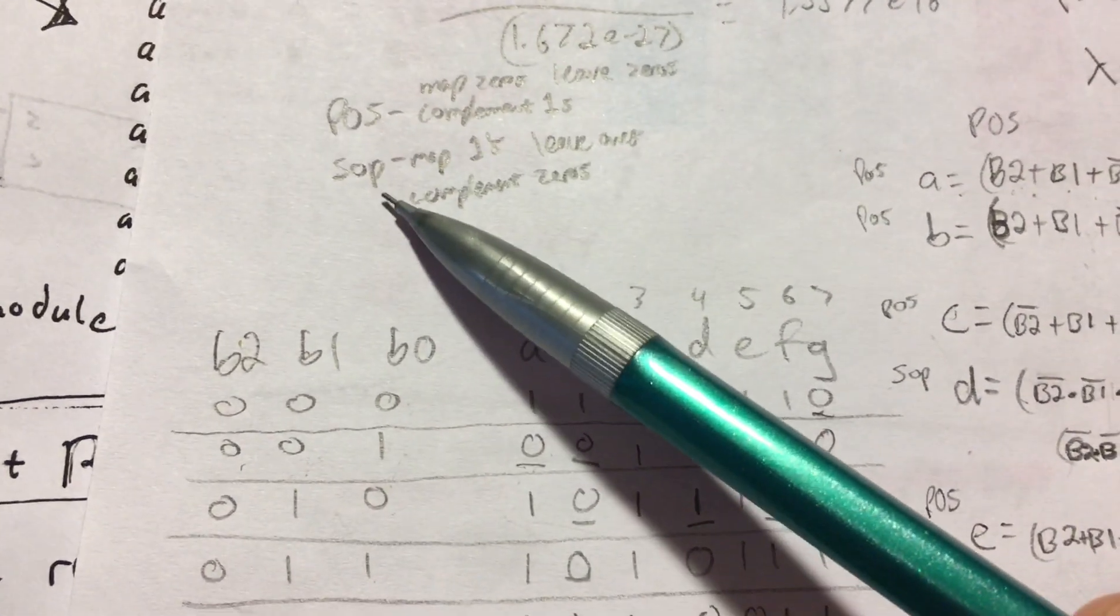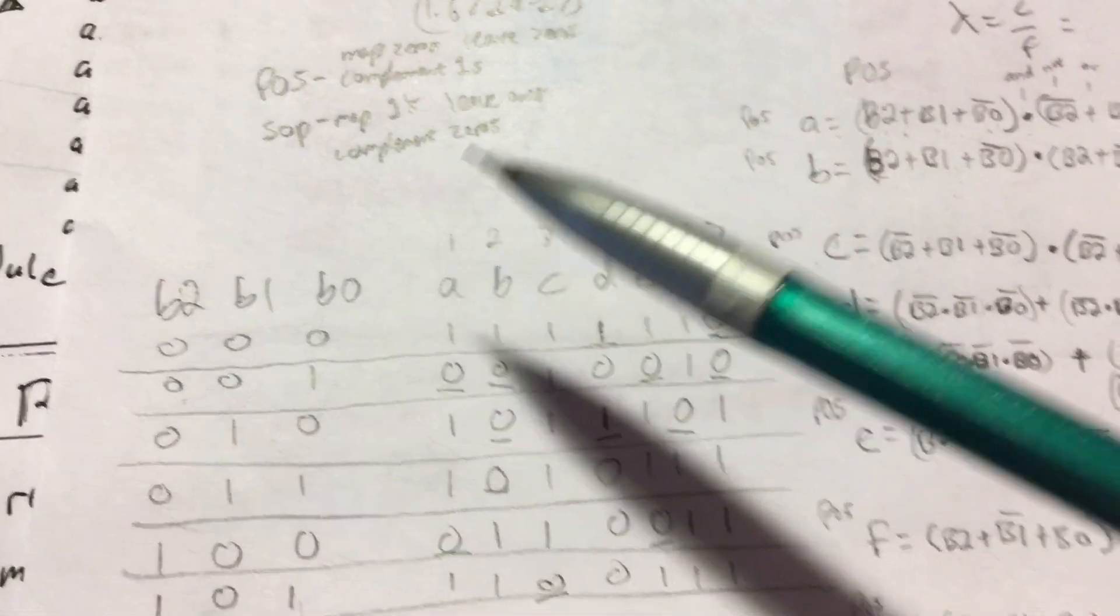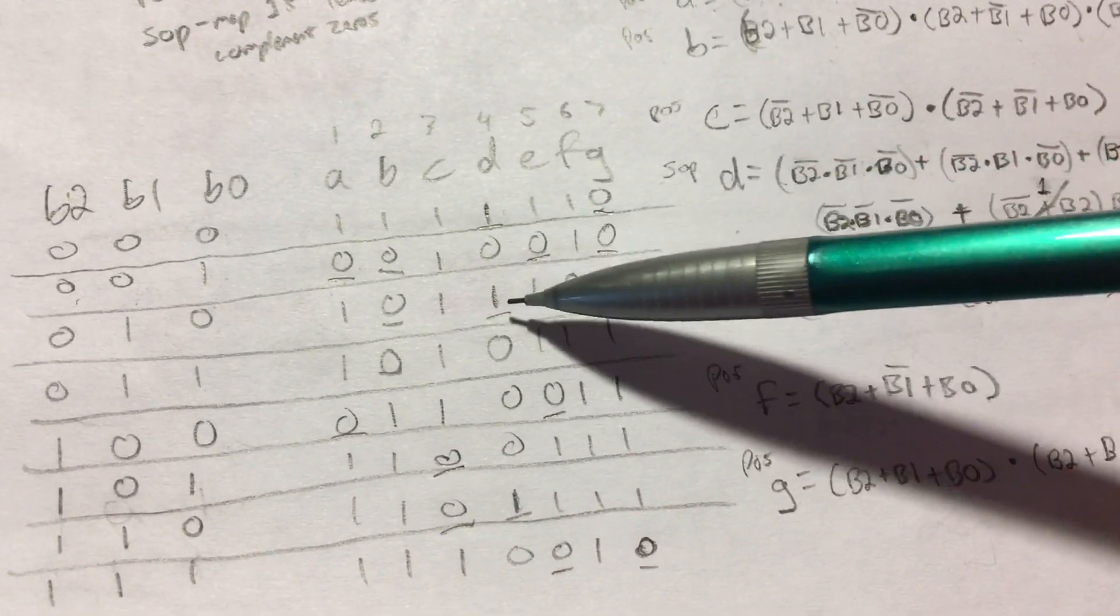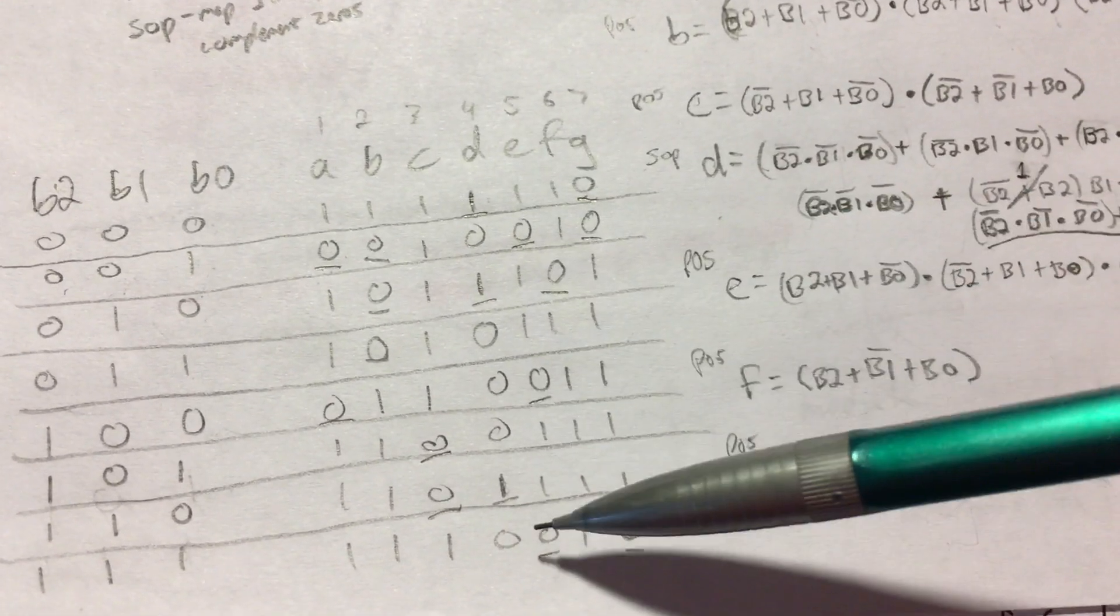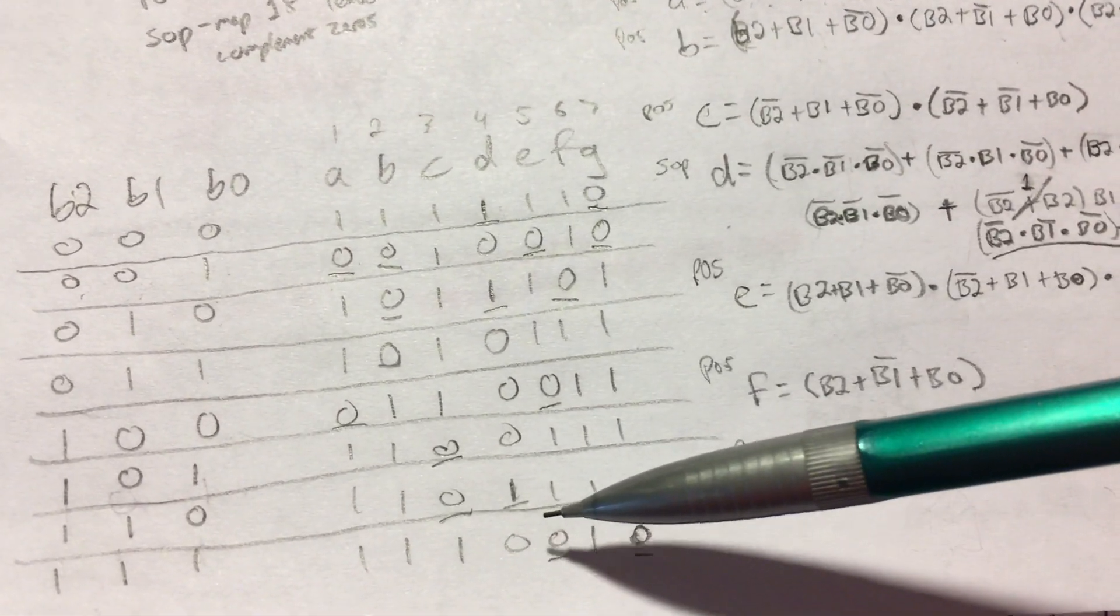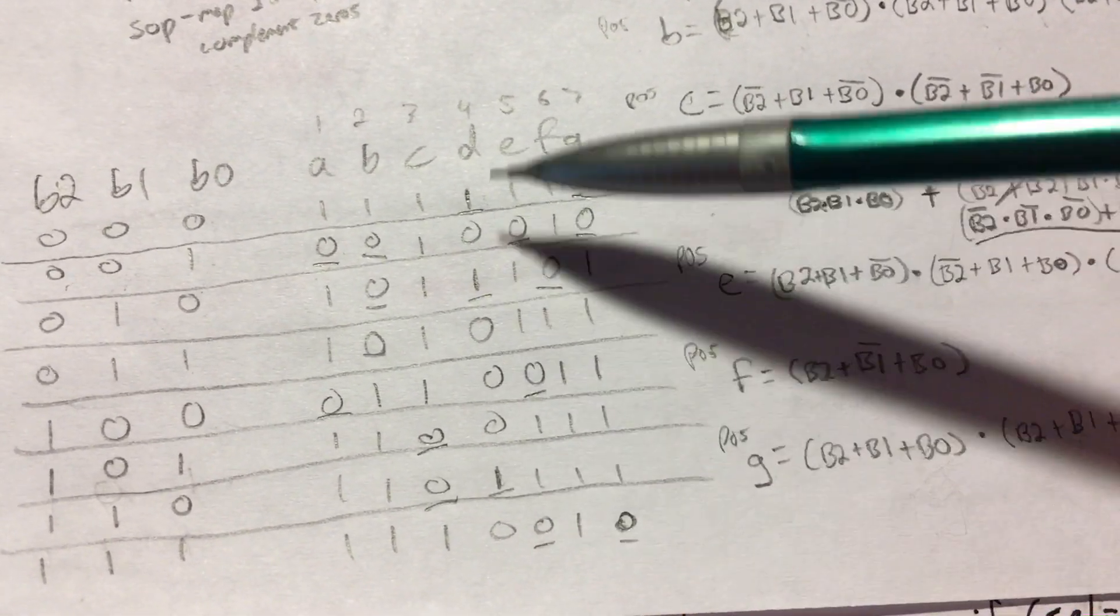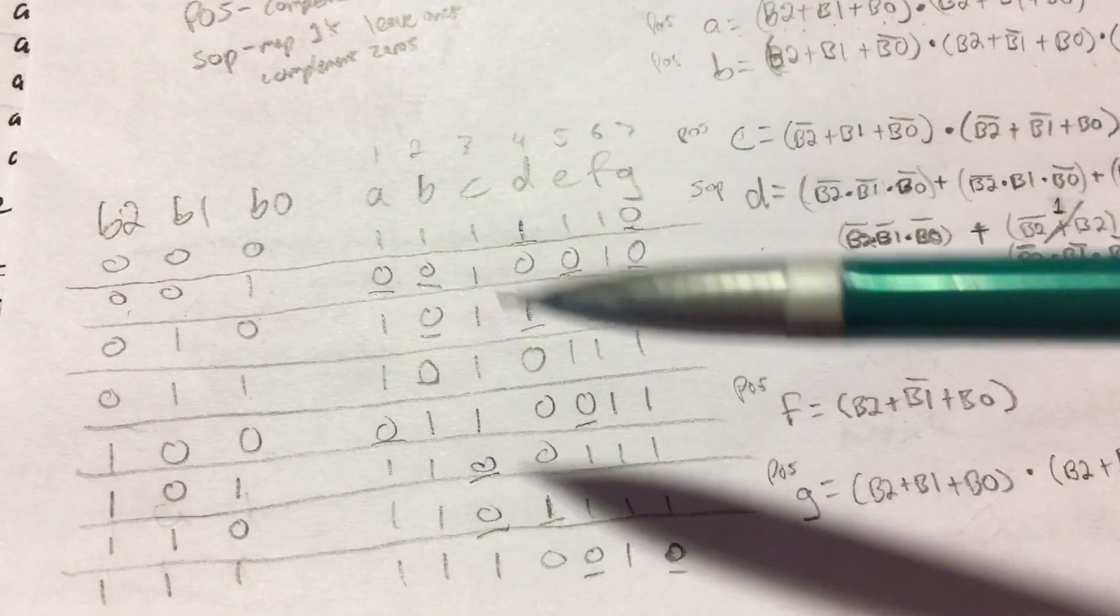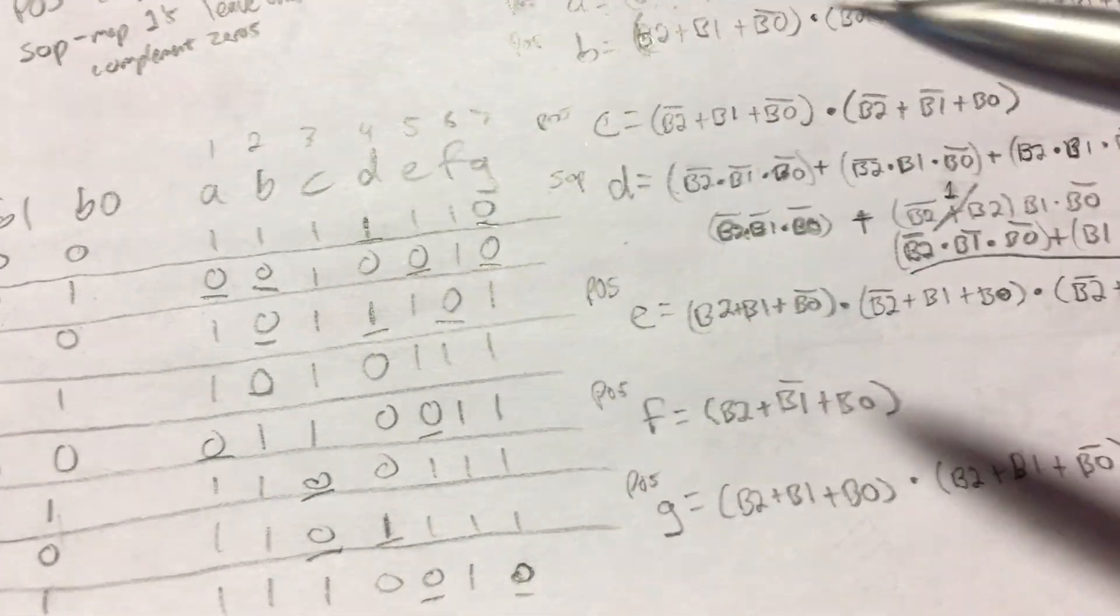You can also do sum of products, where you map the ones. So D has less ones, so it's less work to map them. You could do product of sums, but it's just more work because there's more zeros. So we map the ones and we complement the zeros.